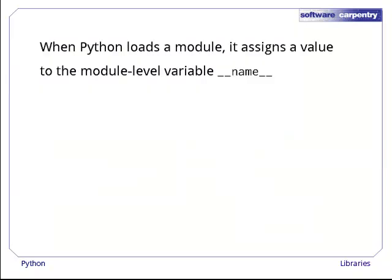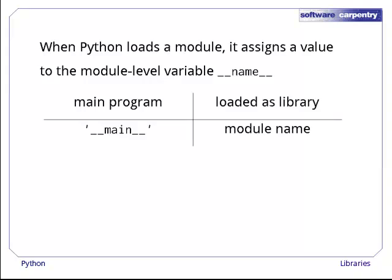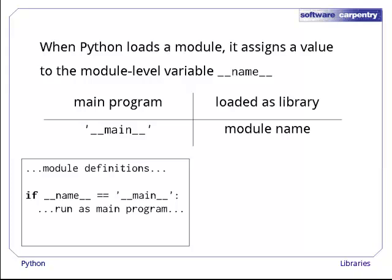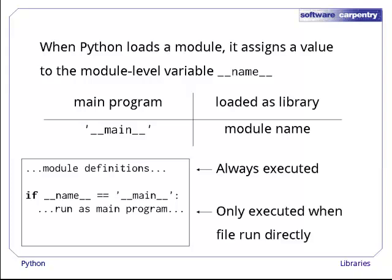The second part of our more polite program was that funny if statement. The trick here is that when Python reads in a file, it assigns a value to a special top-level variable called __name__ with two underscores before and after. If the file is being run as the main program, __name__ is assigned the string __main__, again with two underscores before and after. If the file is being loaded as a module by some other program, Python assigns the module's name to the variable __name__ instead. So imagine the file contains some definitions and then the conditional if __name__ equals __main__. The definitions will always be executed, but the code inside the conditional will only run if the file is the main program. Put another way, the statements inside the conditional will not be run if the file is being loaded as a library by some other program.